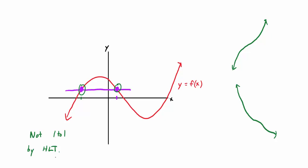If asked this question on a test, if the picture isn't already there, draw the graph and then draw one horizontal line. If it passes through more than one point, it's not a one-to-one function. If it is one-to-one, you might want to draw a couple of horizontal lines, because every horizontal line has to pass through only one point for the function to be one-to-one.